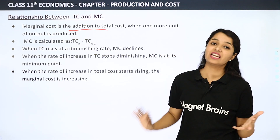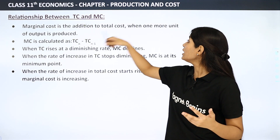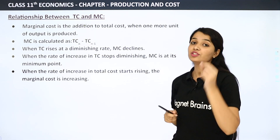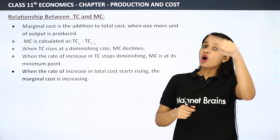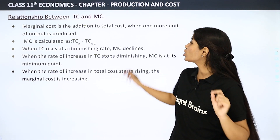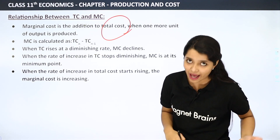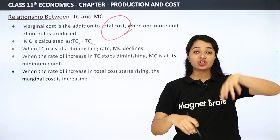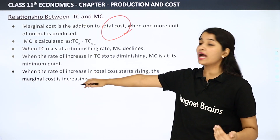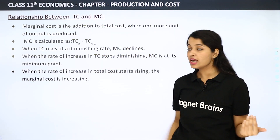When one more unit of output is produced, how much addition is happening in total cost — how much is the total cost increasing — that is what we call marginal cost.